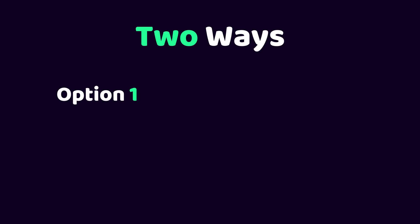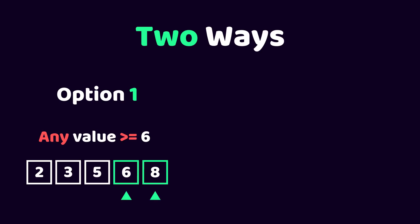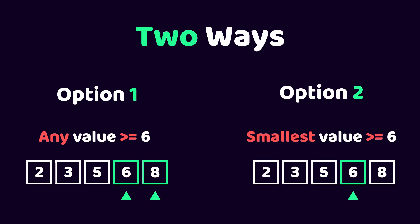There are two different ways you can interpret this. Either it's okay if you return any value greater or equal to the value you're looking for, or you're trying to look for the smallest value that is greater or equal to the value you're looking for. Let's discuss the first option.